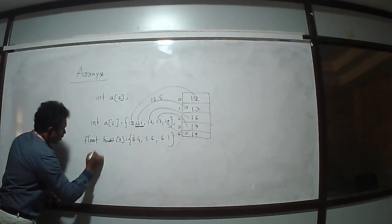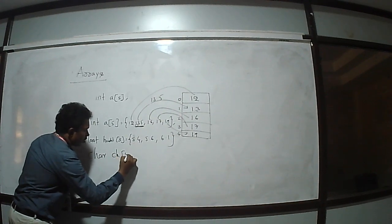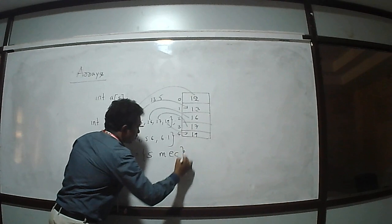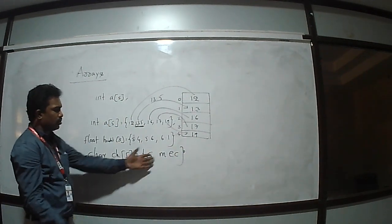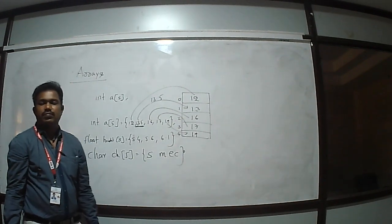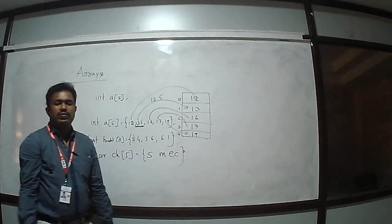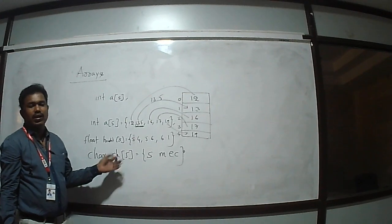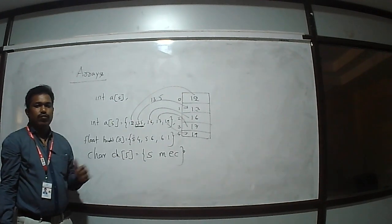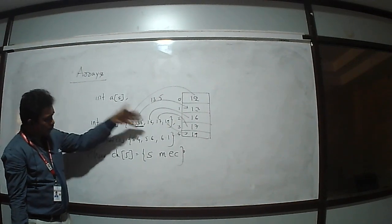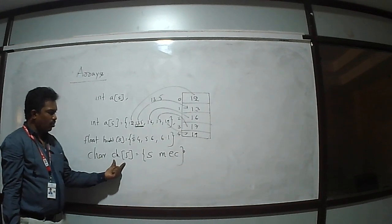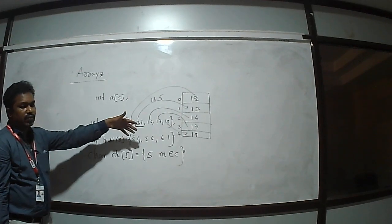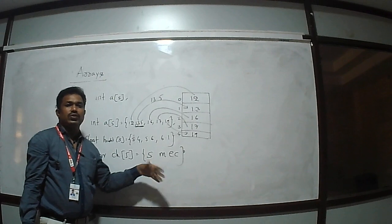Now I'll take one more example. Character — char ch[5]. Now SMEC — how many characters are stored here? 4 characters. These are characters only. So SMEC is 4 characters. Now the first is an integer array, the second is a float data type array, and this one is a character type array. Integer array stores only integer elements. Float data type array stores only floating point values. Character array can store only character constants. That is why the array definition is: a collection of elements of the same data type, or a group of homogeneous elements.